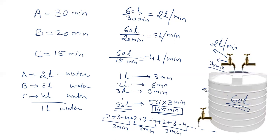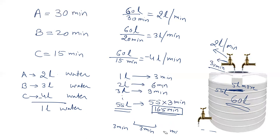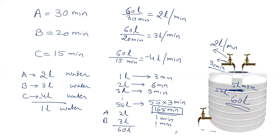The tank is now filled up to 55 liters. We need 5 more liters. In the next cycle it is the turn of A, which will pour 2 liters in one minute — so now we have 57 liters. In the next minute B adds 3 liters. So 55 plus 2 plus 3 equals 60 liters, and the total time is 165 plus 2 equals 167 minutes. The tank will be completely filled in 167 minutes.